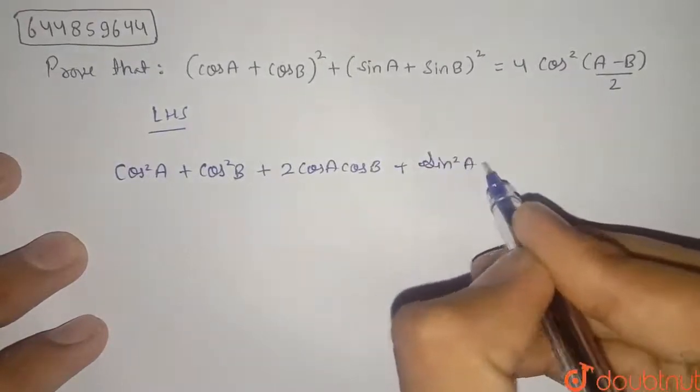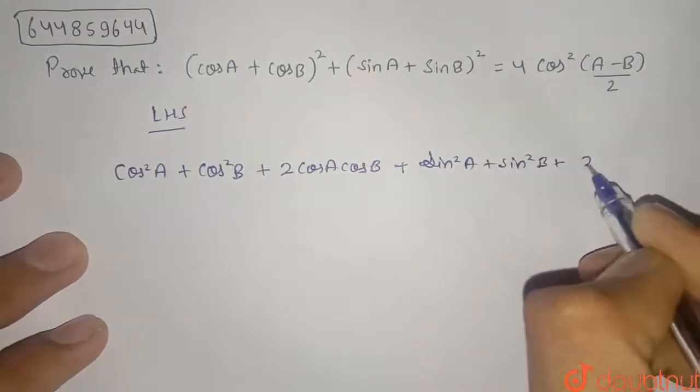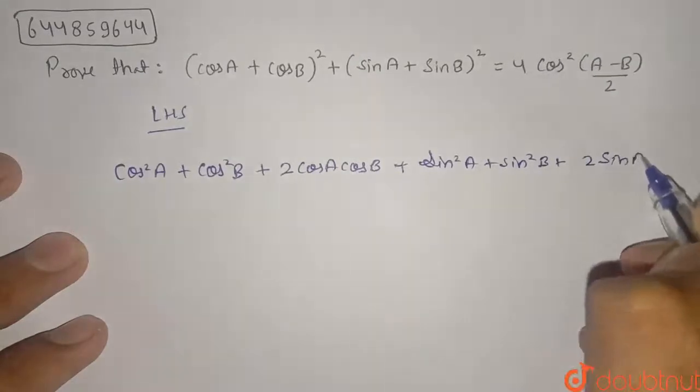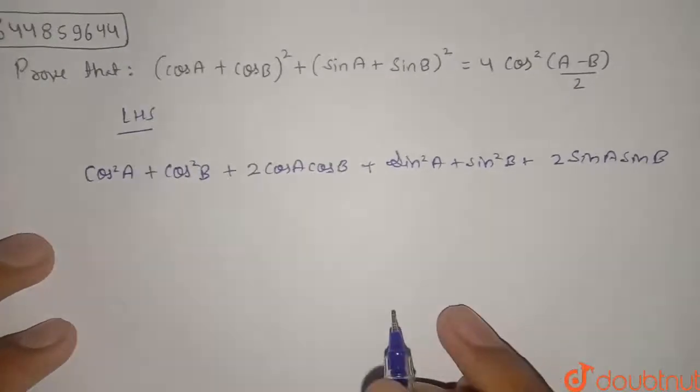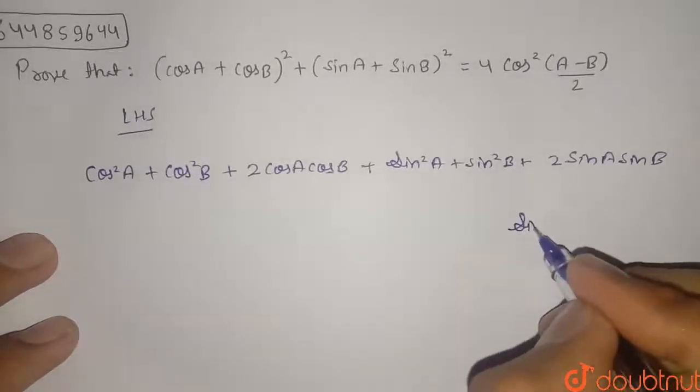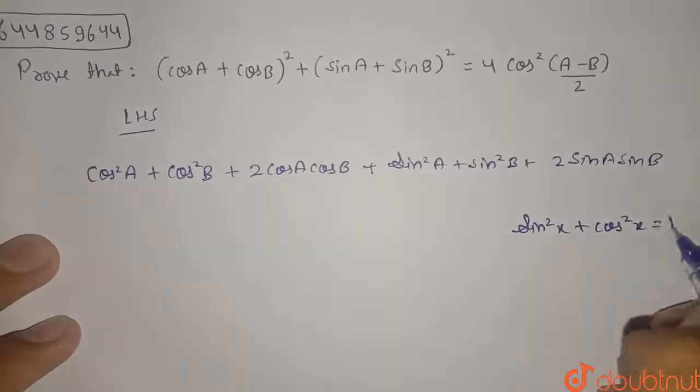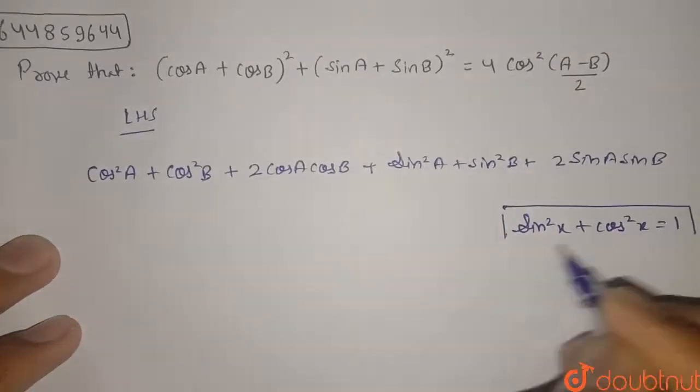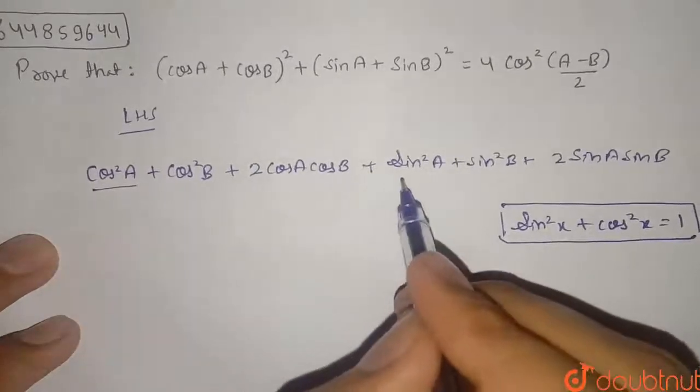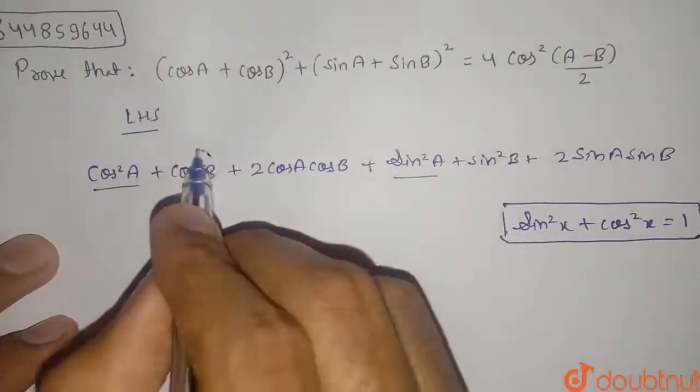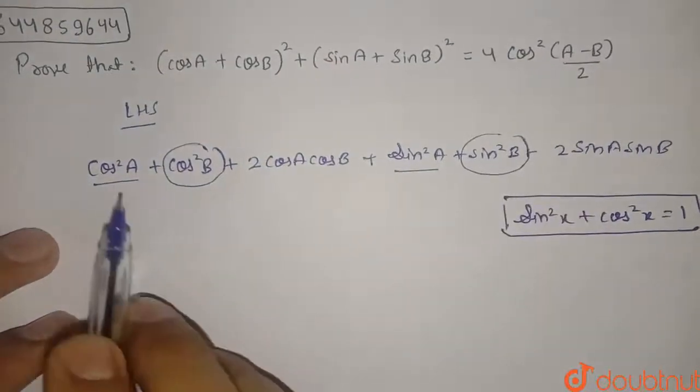Similarly for the second bracket, it will be sin² A plus sin² B plus twice of sin A sin B. Now we know that sin² x + cos² x is equal to 1.